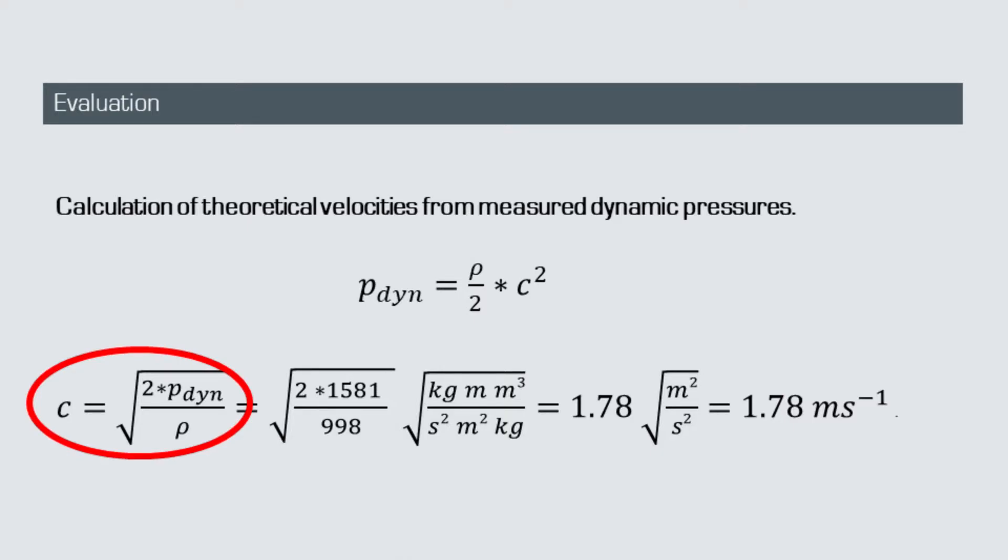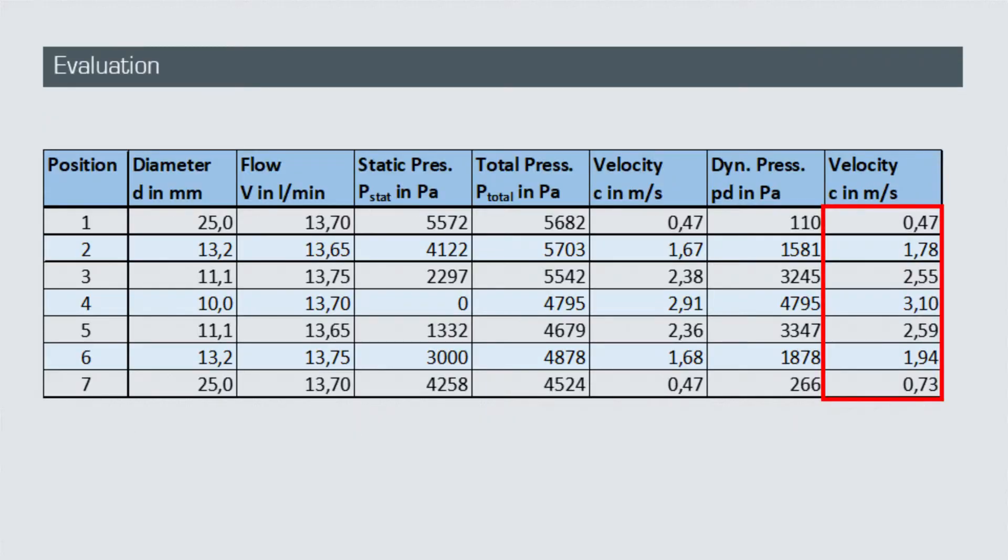For our dynamic pressure at position 2, for instance, we get a theoretical velocity of 1.78 meters per second. After we have done this for all positions, we again add these values to our data table.